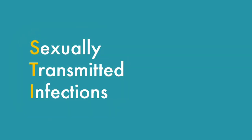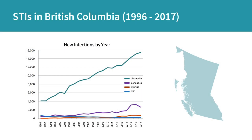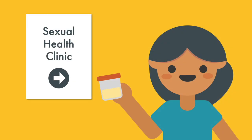Sexually transmitted infections, or STIs for short, are infections spread through sexual contact. According to the BC Centre for Disease Control, the prevalence of STIs such as chlamydia and gonorrhea are on the rise. This is partly because not enough people are receiving the STI screening they need.